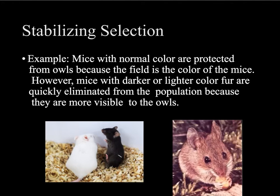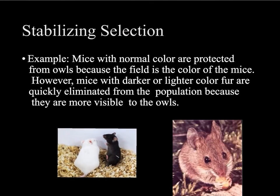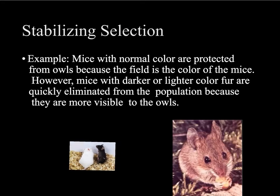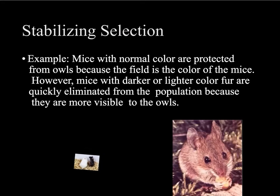As an example, mice come in a range of colors. Mice that are very dark or very light colored are more visible to predators like owls and hawks, so they're more likely to be eaten. Those genes for dark or light fur aren't passed on as much. Mice with better camouflage due to their fur color are more likely to survive and reproduce, so alleles for brownish fur increase while alleles for dark and light fur decrease.